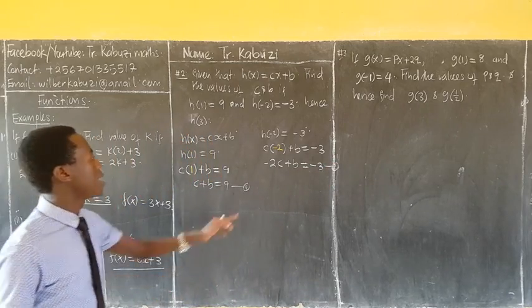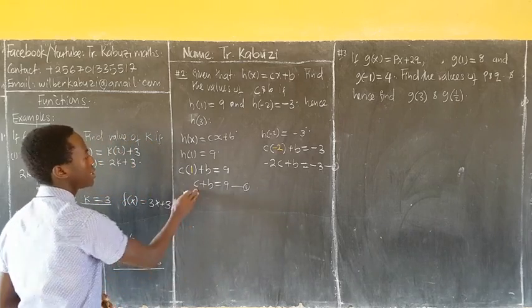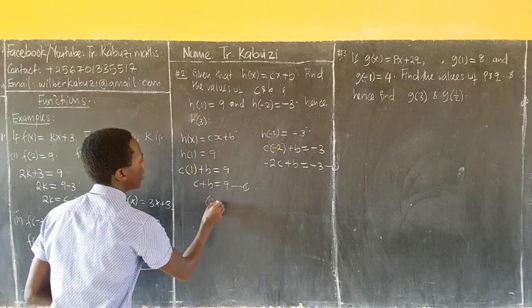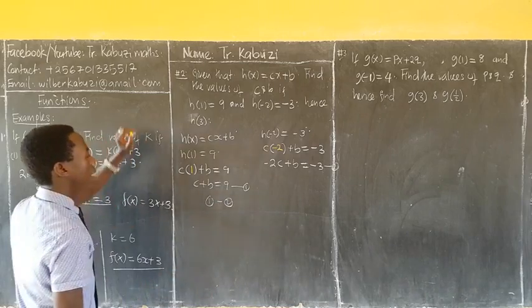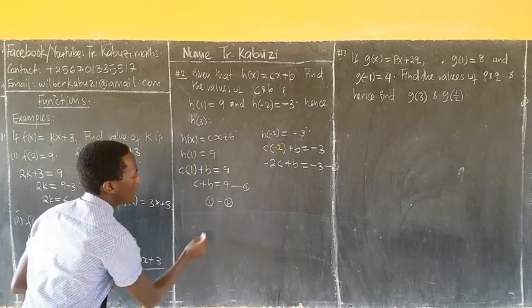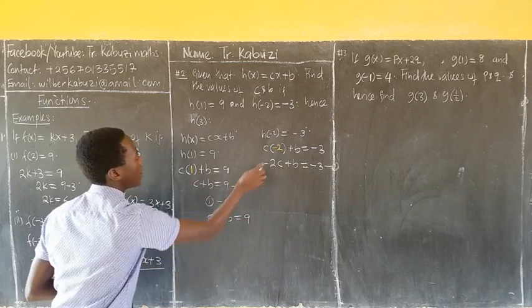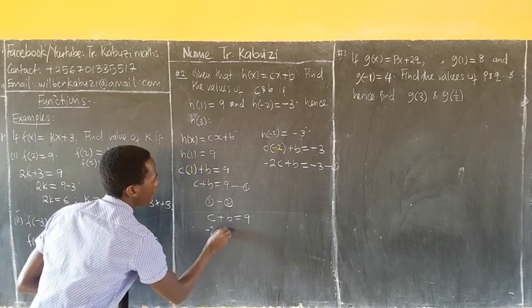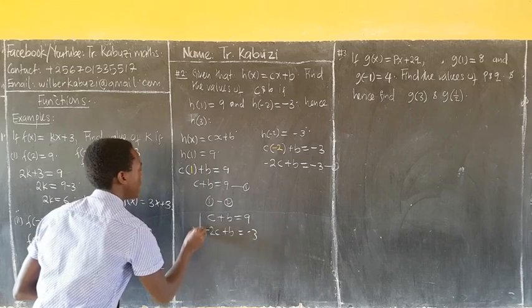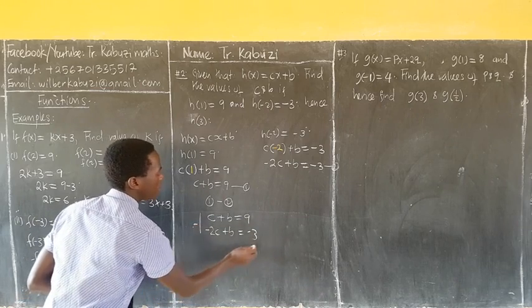So we can solve these two with each. Side by side, equation 1 minus equation 2. When I bring them here, C plus B equaling to 9 minus negative 2C plus B equaling to negative 3. I will subtract the two.